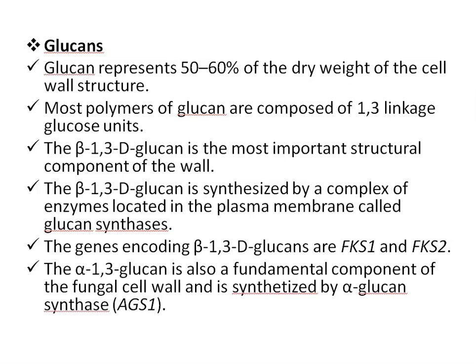Beta-1,3-d-glucan is synthesized by a complex of enzymes located in the plasma membrane called glucan synthase. The genes encoding beta-1,3-d-glucans are FKS1 and FKS2, which were initially identified in Saccharomyces cerevisiae. Analogues of these genes are now known in several species of Candida, Aspergillus, etc. Disruption of one of these genes affects cell growth, but elimination of both causes cell death. Alpha-1,3-glucan is also a functional component of the fungal cell wall and is synthesized by alpha-glucan synthase.